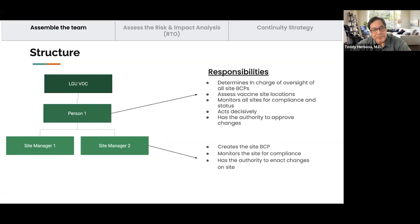To give you an idea of how we tried to organize this: it has to be the local government vaccine operation center, with a leader who will have several responsibilities — oversight and making sure there is continuity planning, or a public service continuity plan. From the private sector we call it business continuity, but in government we call it a service continuity plan. Then you assess the vaccine site locations.